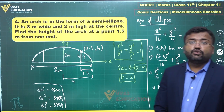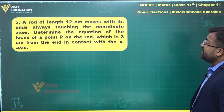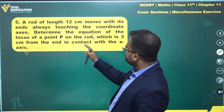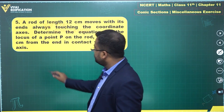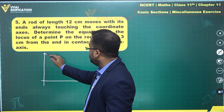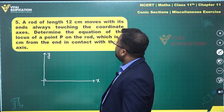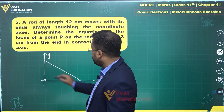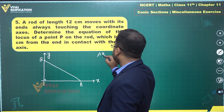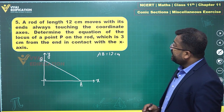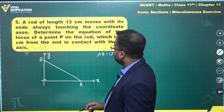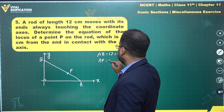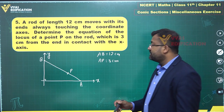The fifth question: a rod of length 12 centimeters moves with its ends always touching the coordinate axes. Determine the equation of the locus of point P on the rod which is 3 centimeters from the end in contact with the x-axis. Let A be on the x-axis and B on the y-axis, with AB = 12 cm and AP = 3 cm, so BP = 9 cm.